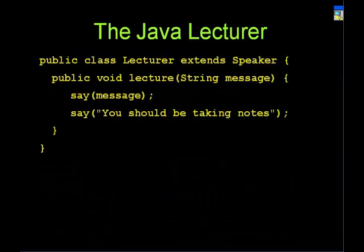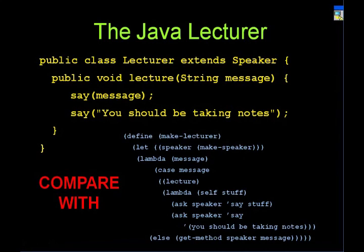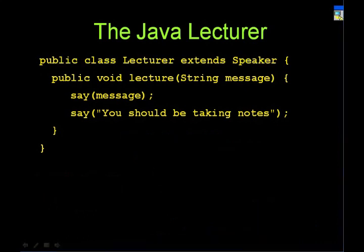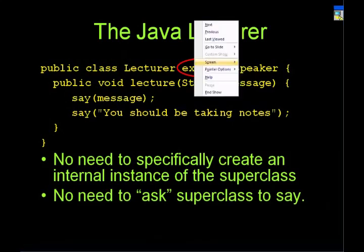Now let's look at Lecturer. When you're extending the speaker class in Scheme, you have to keep track of the state separately. But in Java, you just use 'extends Speaker' — you don't actually have to explicitly keep track of the speaker. When you call a method, Java is smart enough that you just use the method name directly, and it will check if the method is in the lecturer class, and if it isn't, it will go into the super class. You do not have to say 'ask speaker say whatever' — just call say.